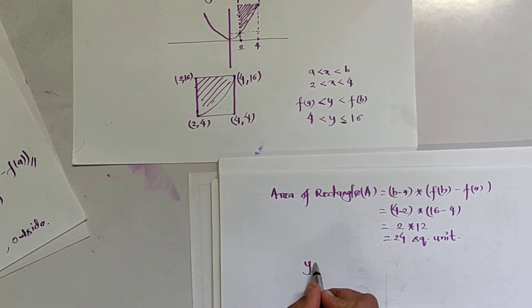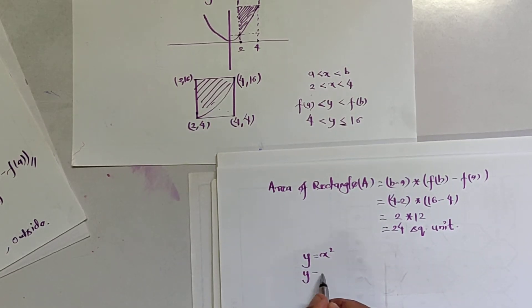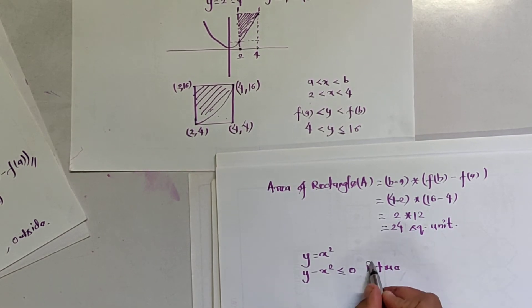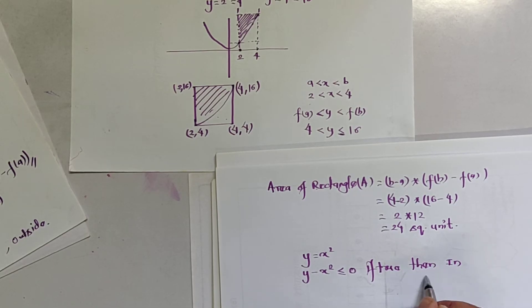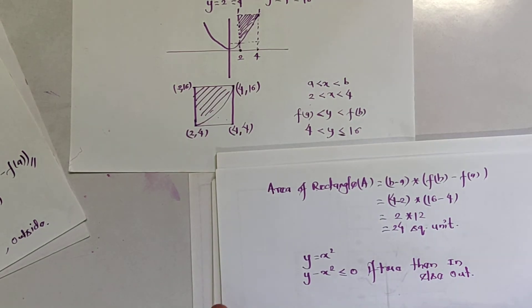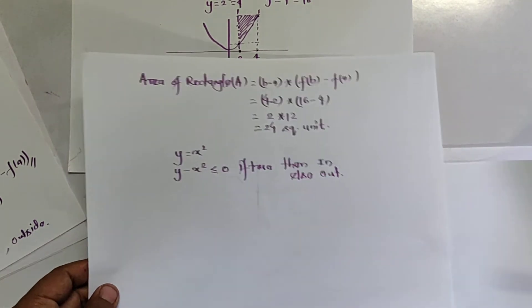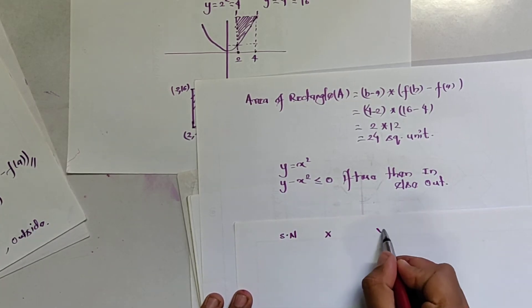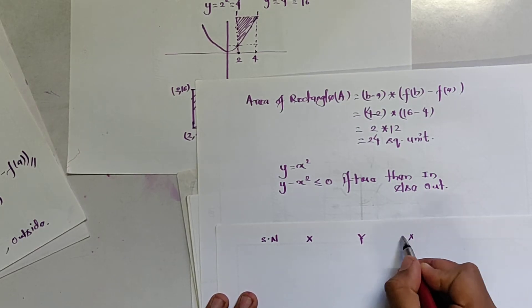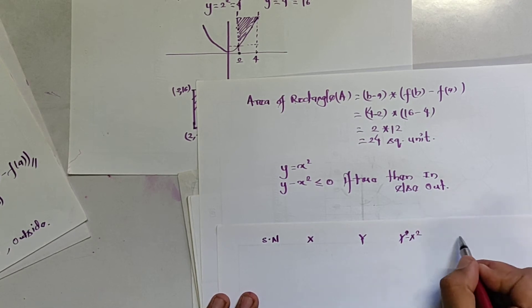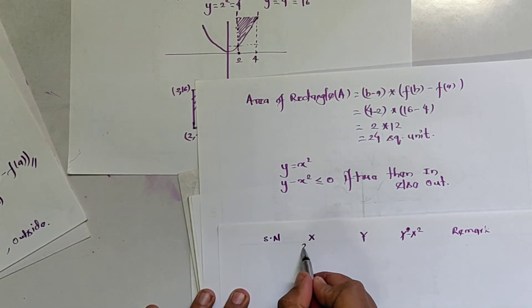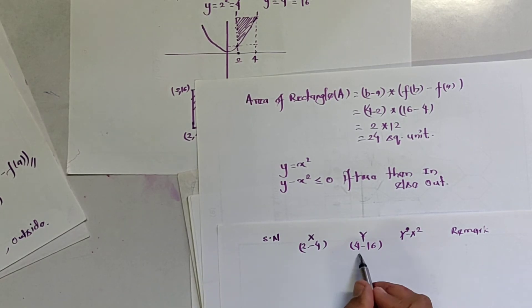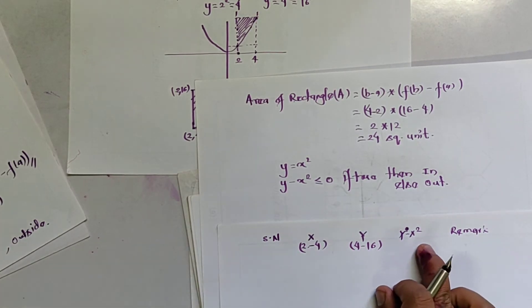Since we have supposed y equals x squared, the boundary condition becomes: y minus x squared less than or equal to 0. If this condition is true, the point is inside the region (count as 1); else it is outside. Let us set up a table with columns: S.No, x, y, the condition y minus x squared, and a remark. Here x is between 2 and 4, and y is between 4 and 16.